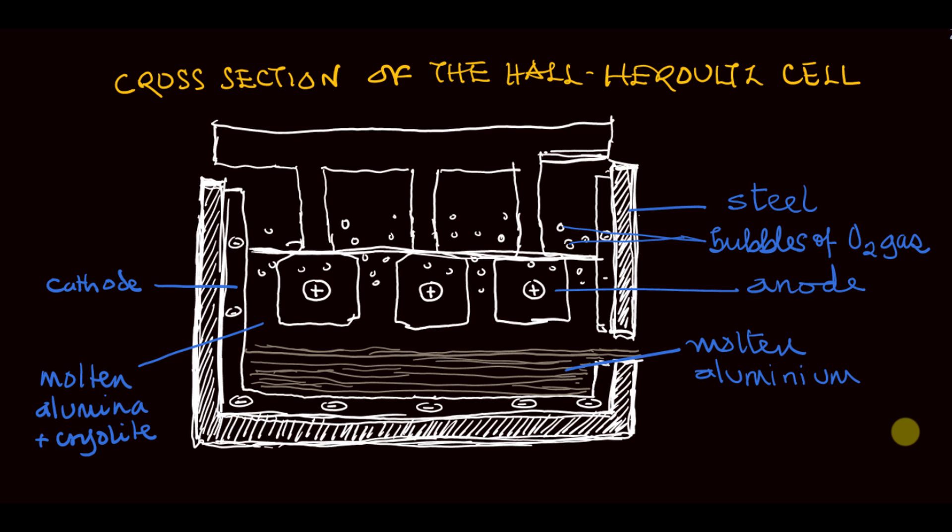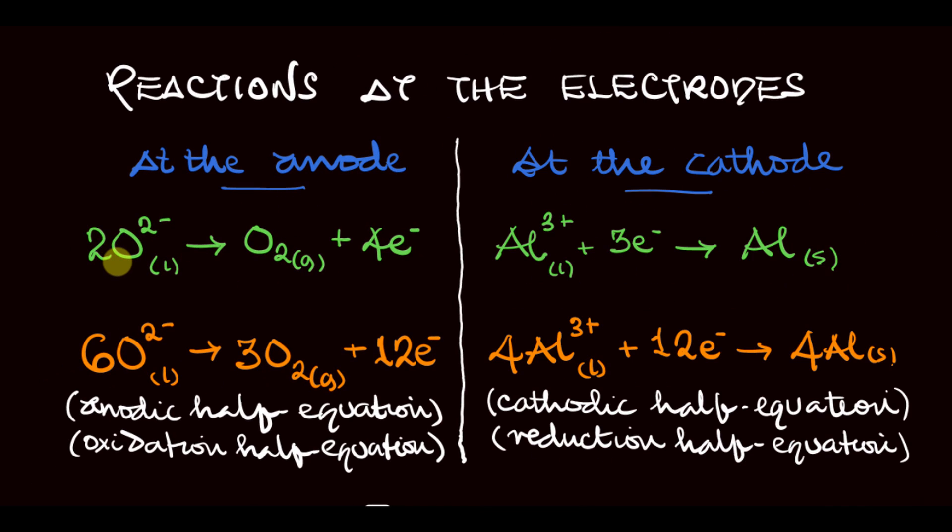Let's see the reactions that occur at the electrodes. At the anode, the oxide ions undergo oxidation. Each oxide ion loses two electrons to form an oxygen atom. But remember, oxygen is a diatomic molecule, so that reaction has to occur twice. That's why we have 2O2- giving us O2 plus 4 electrons. While at the cathode, the aluminum ion undergoes reduction by gaining 3 electrons lost at the anode to form aluminum metal, which sinks to the bottom of the cell.